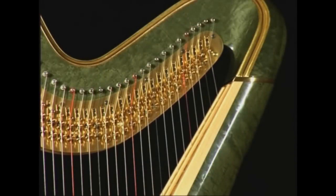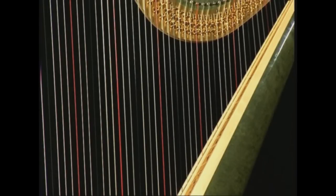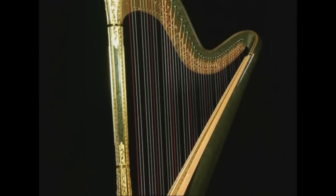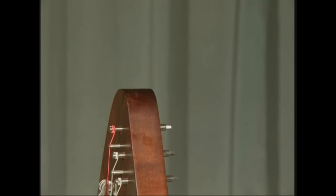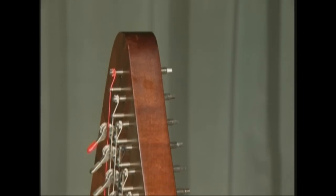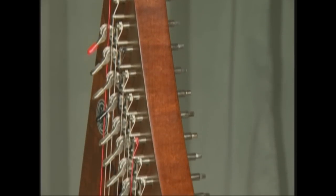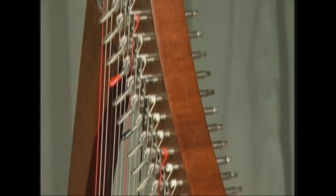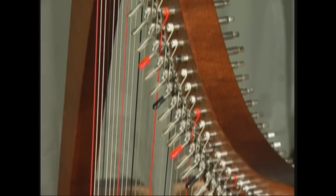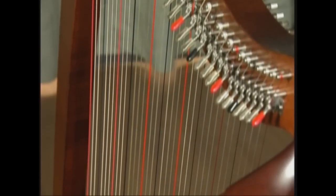A string hinged at two points and placed under tension produces a sound whose height depends on the length of the string, the type of material it is made of, and the weight of the tension it is under. Maintaining the tension constant and increasing the length of the string will produce a lower pitch, while decreasing the length of the string will produce a higher pitch.